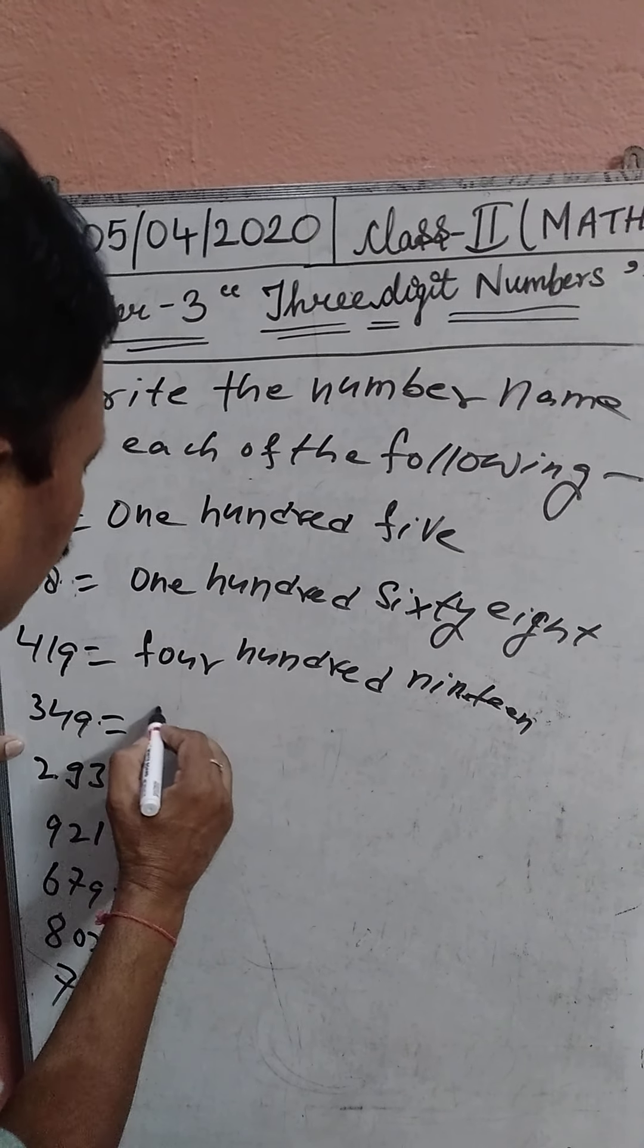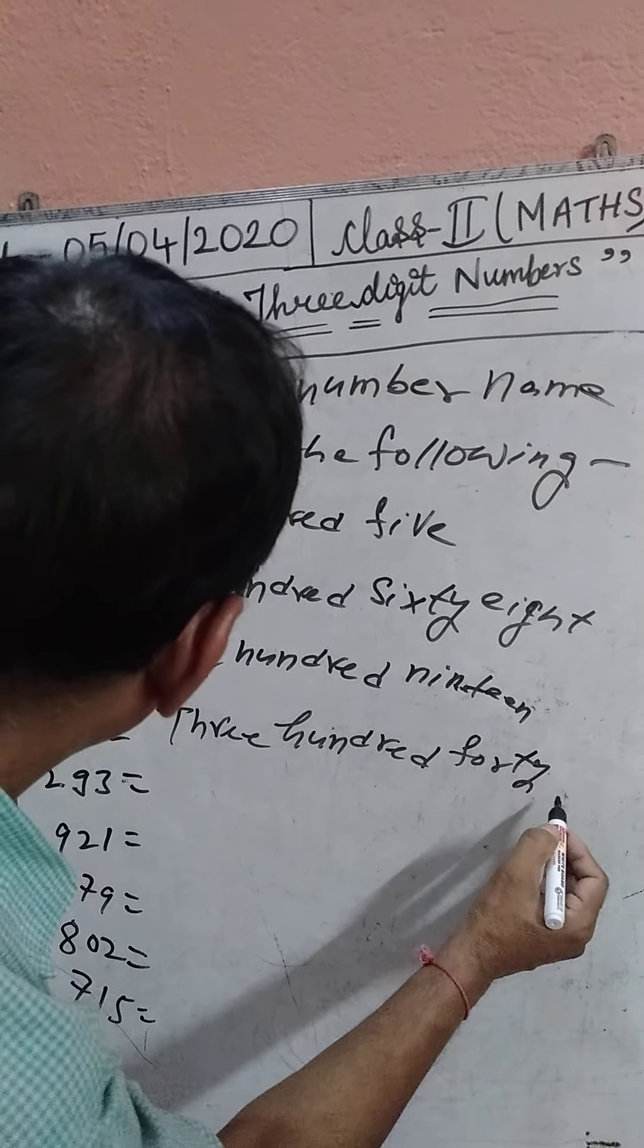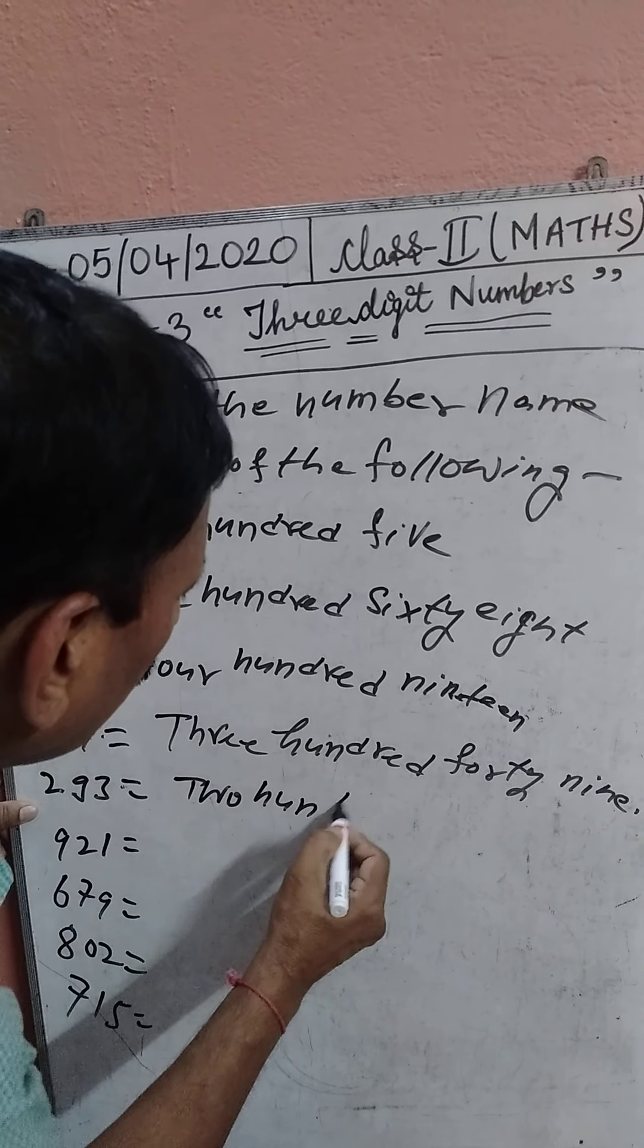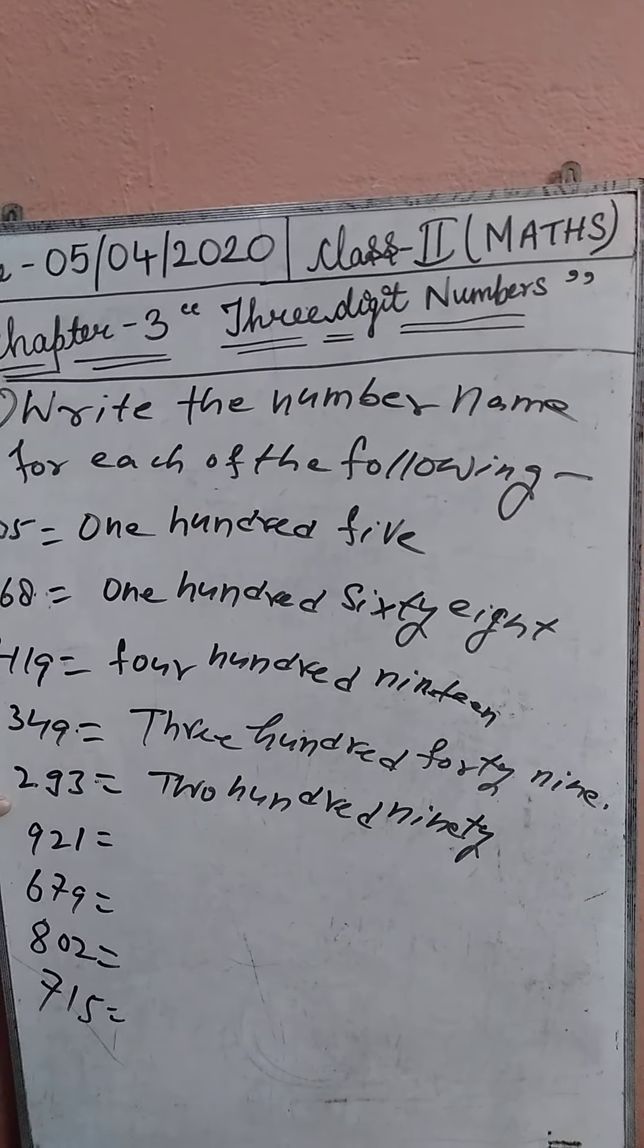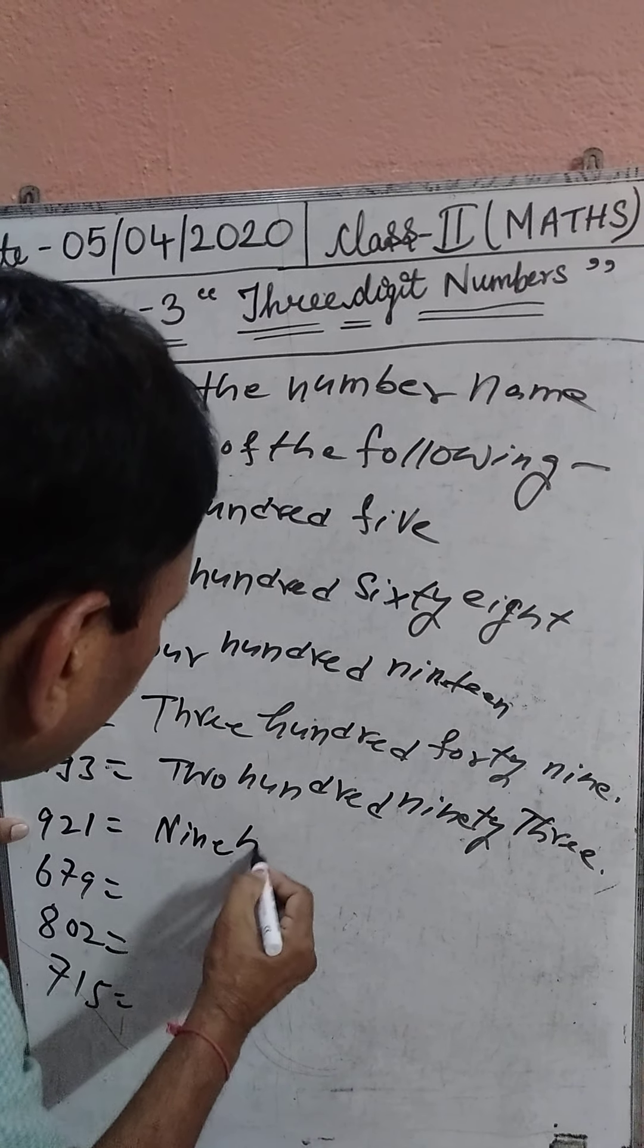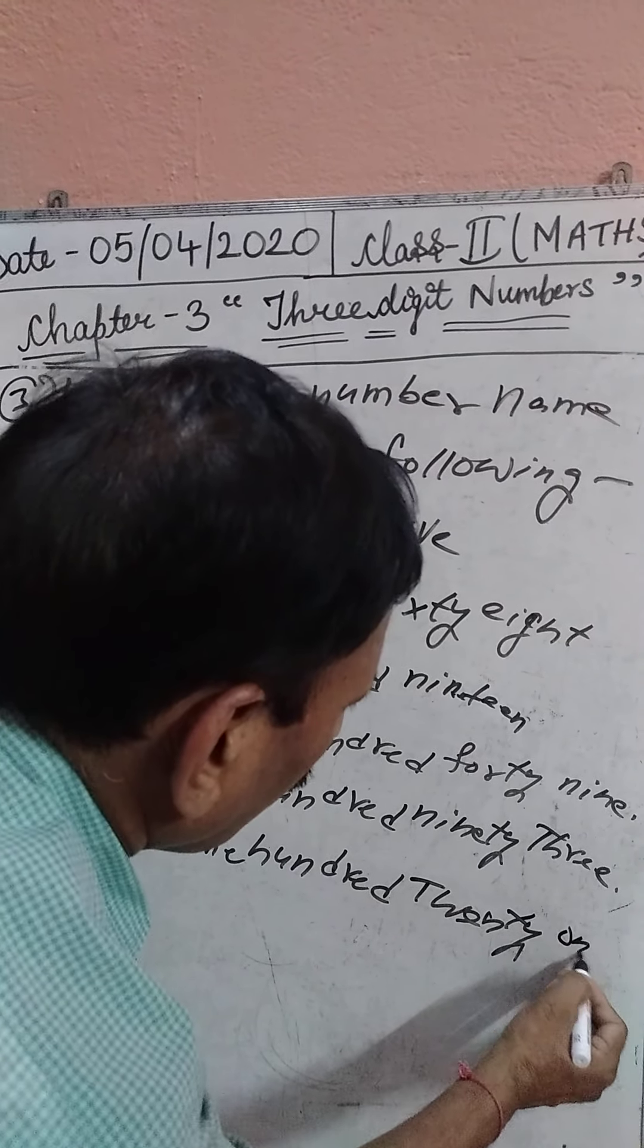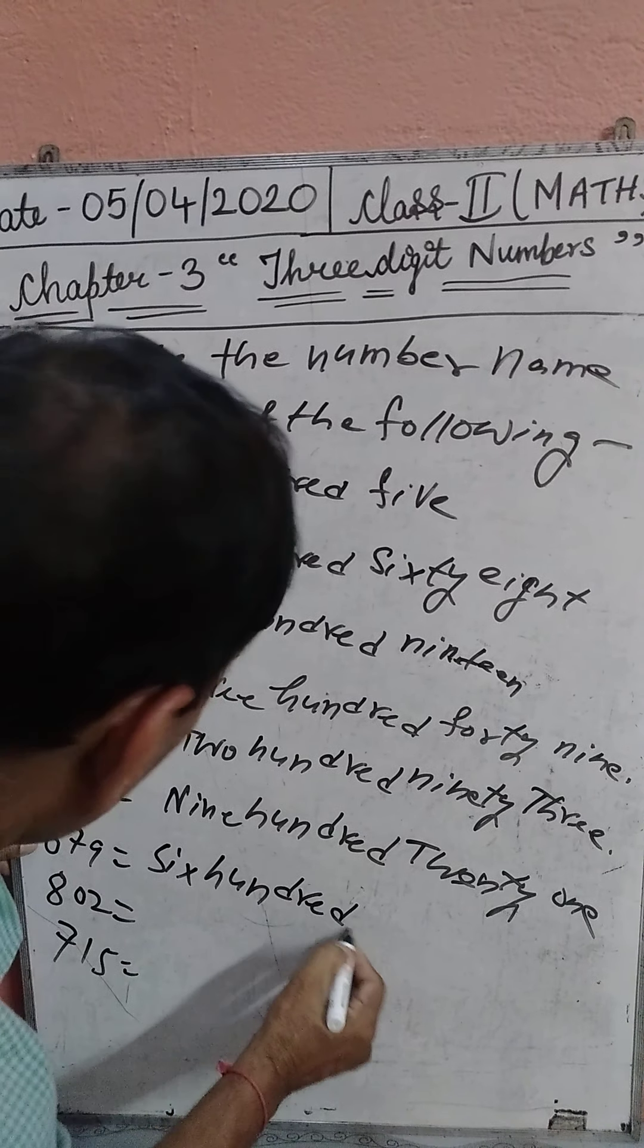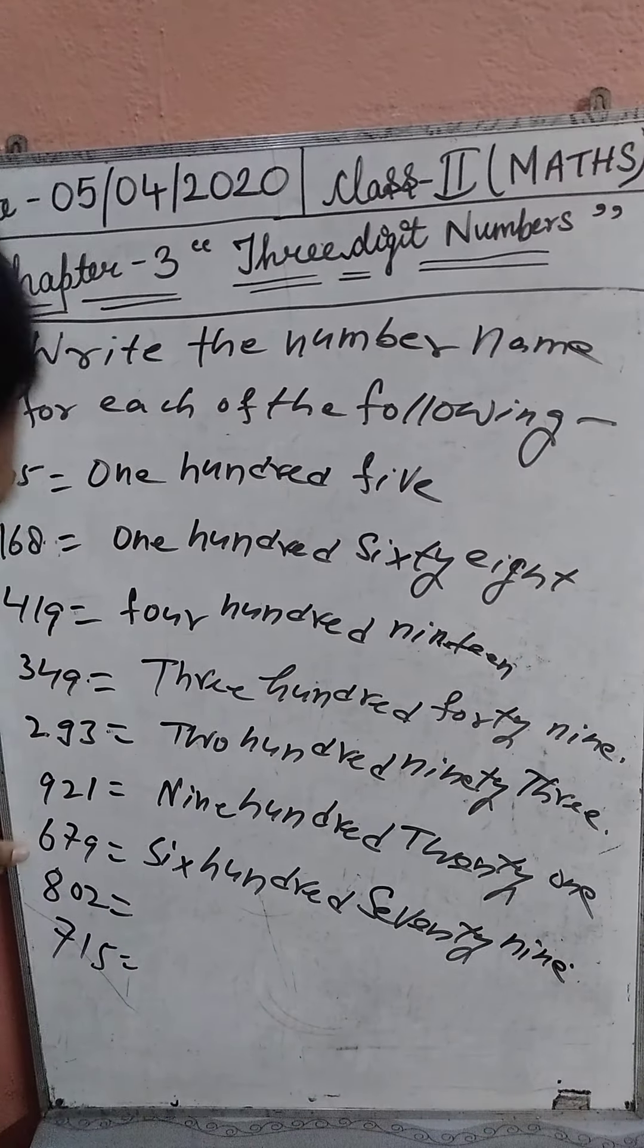Next, 349: three hundred forty-nine. 293: two hundred ninety-three.